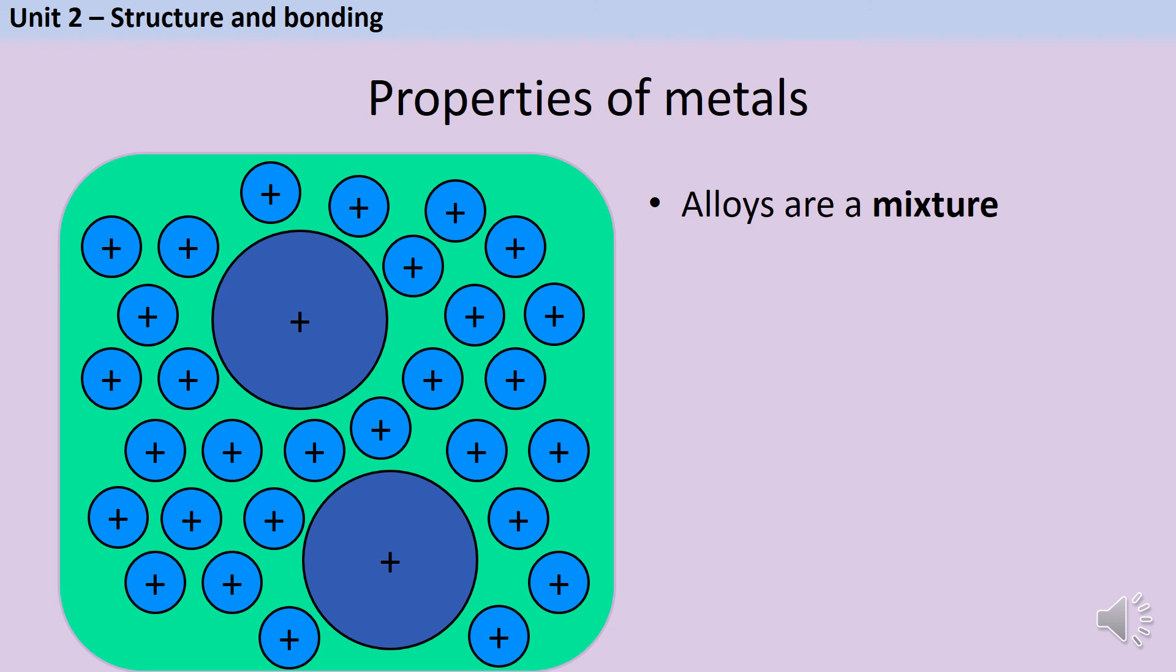Because the atoms are different sizes, there aren't completely regular rows. The larger atoms distort the rows and push them out of shape. Because of this, it's no longer possible for the layers to slide over each other, and this is going to make the alloy much harder.